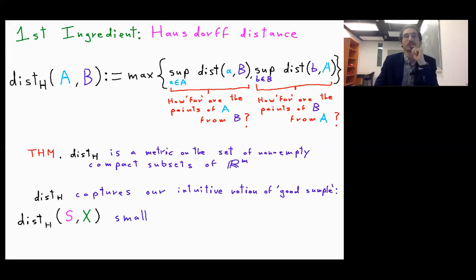By this I mean that if this Hausdorff distance between my sample S and my set X is small, then I can say that S is a good sample of X.